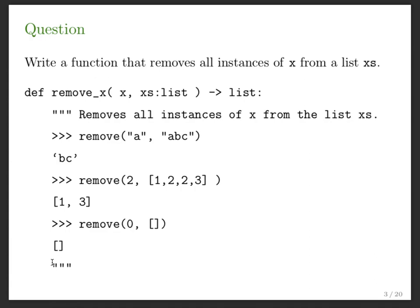We're going to go straight into it today — it's going to be mostly me programming in front of you. Please stop me if I'm going too fast and ask questions. The first thing I want to do is write a function that removes all x's from a list x's. For example, if I want to remove the character 'a' from [a, b, c], that should leave [b, c]. Remember, a string is like a list. Remove 2 from [1, 2, 2, 3] should give you [1, 3], and remove 0 from an empty list should give you empty.